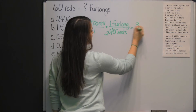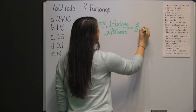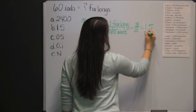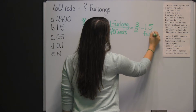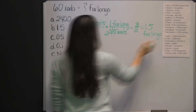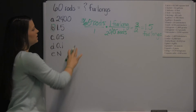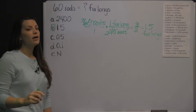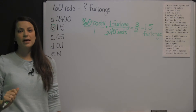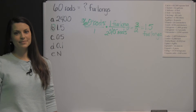That gives us 3 halves furlongs, or 1 and 5 tenths furlongs. There's an example, and our answer is B — a problem you'd see on the mathematical usage section of the CAST exam.